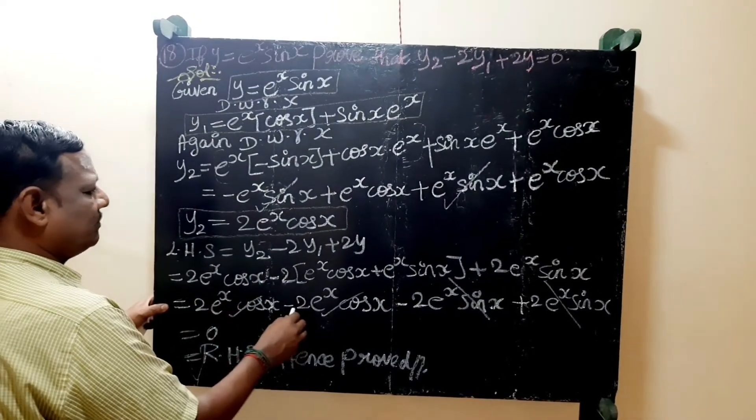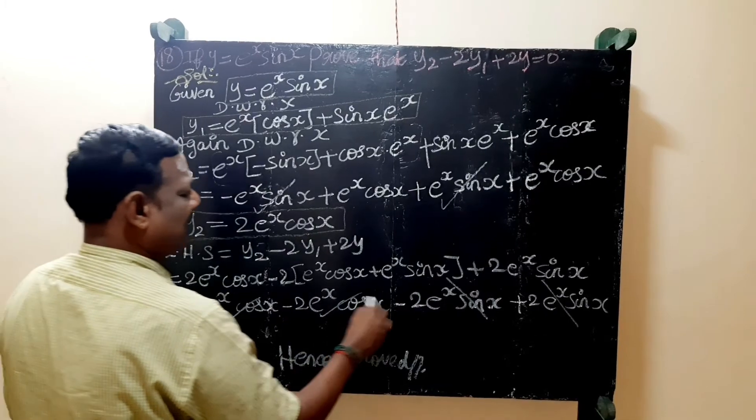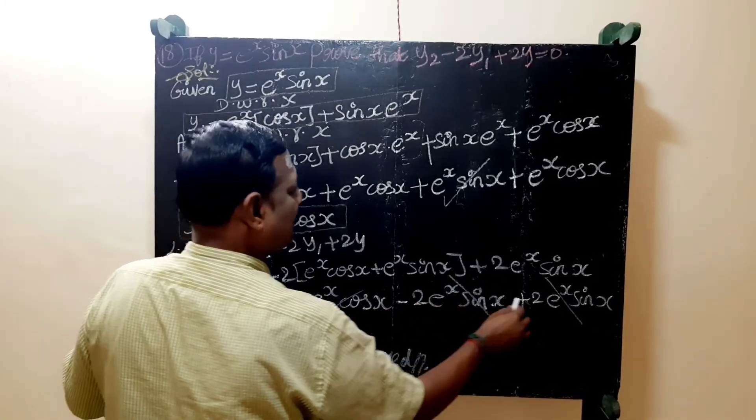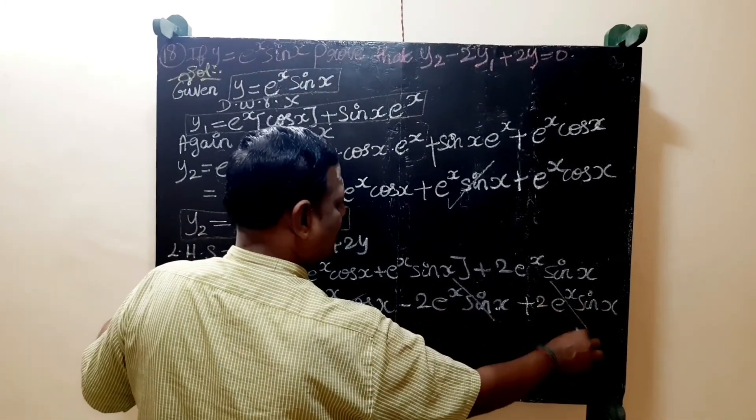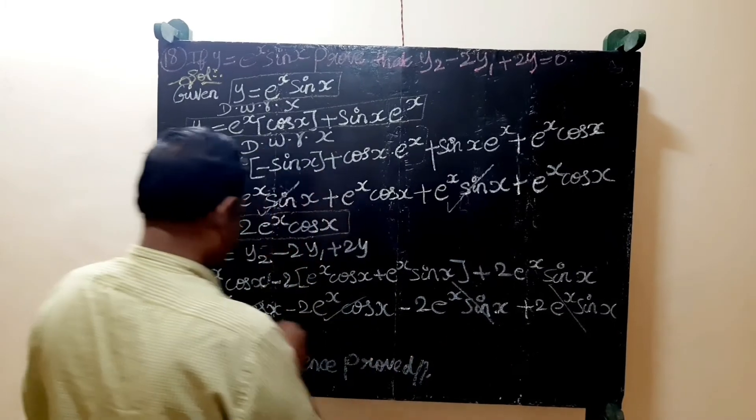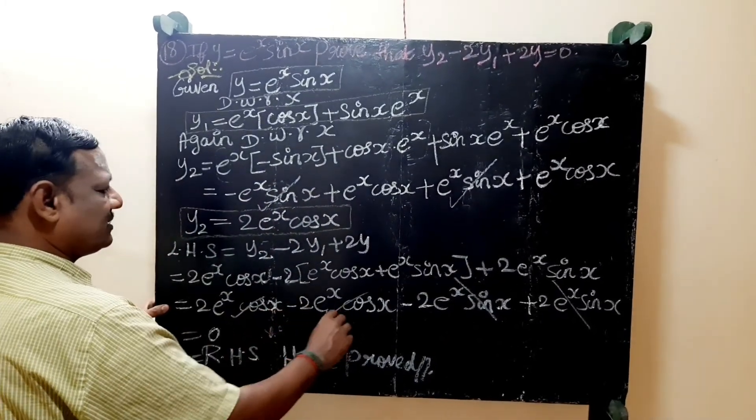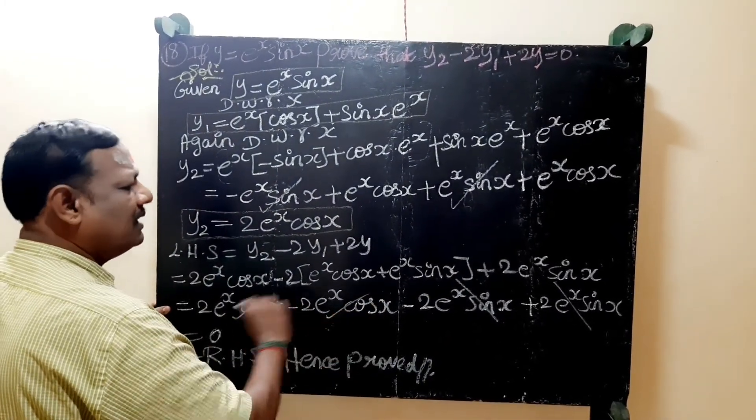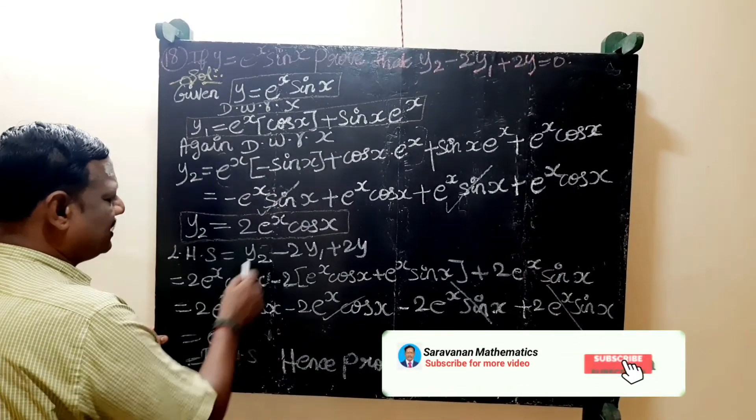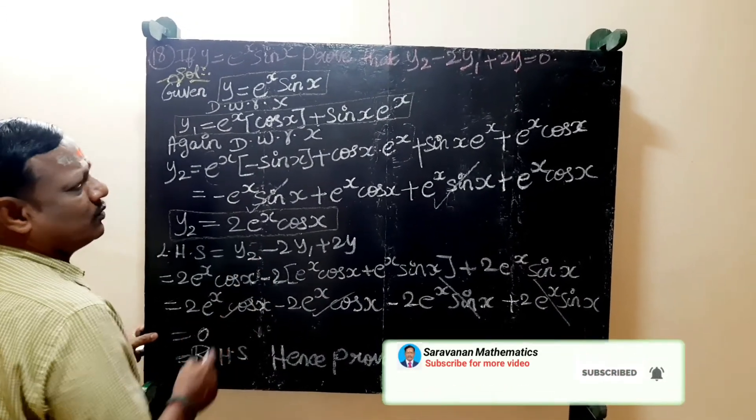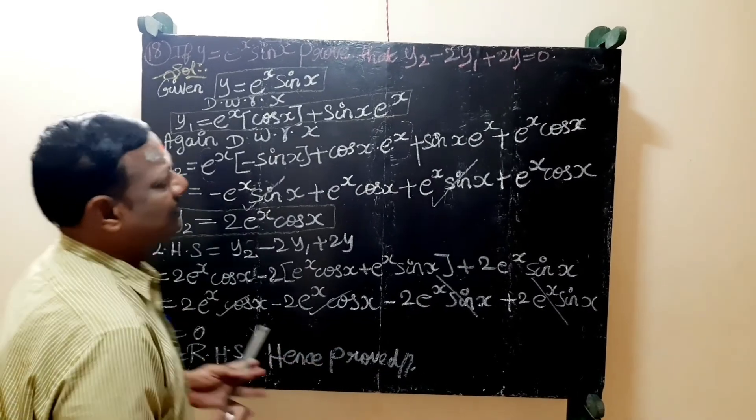2e power x cos x minus 2e power x cos x minus 2e power x sin x plus 2e power x cos x plus 2e power x sin x. This is equal to 0. LHS equals RHS, proved.